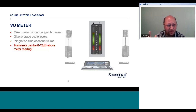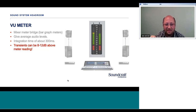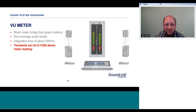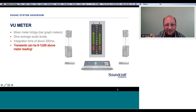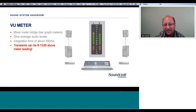Transients can be 8 to 12 decibels above the meter reading. That's where headroom comes in — we need reserve capacity on the system for these transients so they can pass through the sound system undistorted. We do not want distortion, and we need to know that on the meter bridge these transients will not be visible. Those familiar with DAWs and mixers that show peak hold will be familiar with this concept.